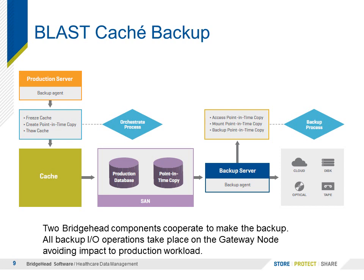Using the BLAST cache backup from the earlier Section 3, we're still leveraging that same model. The two Bridgehead components cooperate to perform the backup, and all the backup I/O operations take place on the gateway node or the backup server to avoid impact on the production workload. The goal here is to kick off this environment — the production server has an agent running on it, and that agent is going to freeze cache, create a point-in-time copy, and thaw cache.